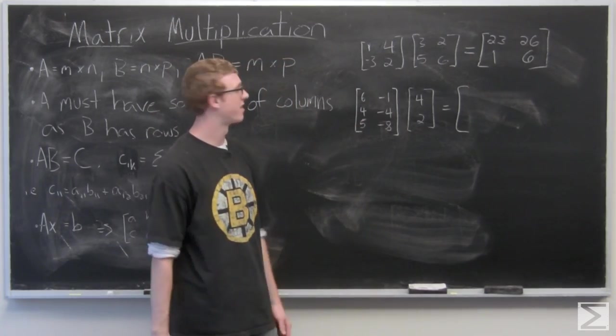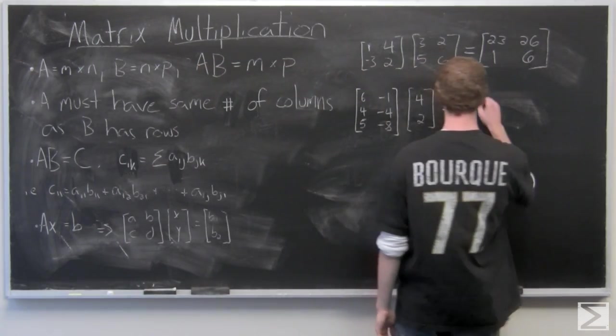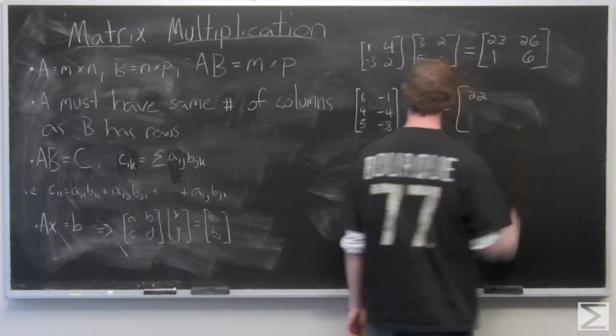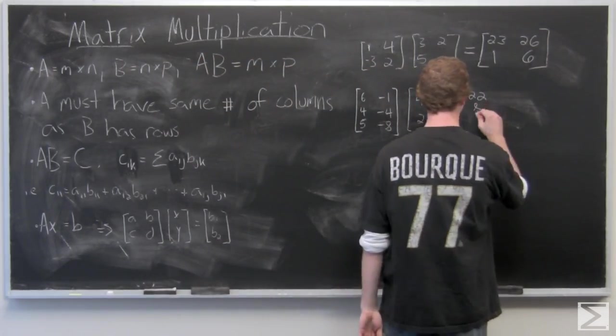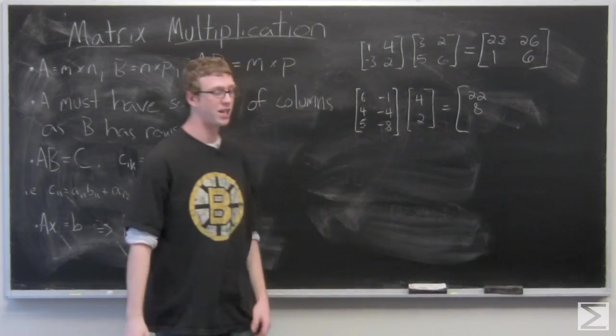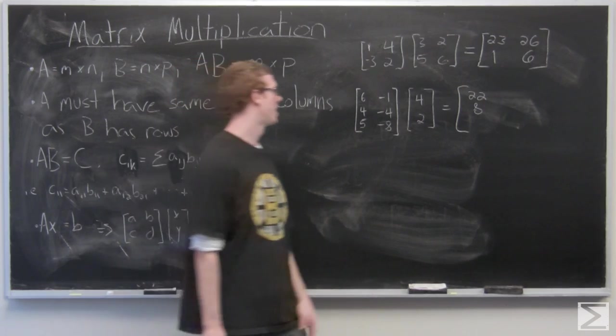So let's start off and just multiply this through. 6 times 4, negative 1 times 2. 4 times 4 and negative 4 times 2. Add to make 8. And 5 times 4 and negative 8 times 2. Add to make 4.